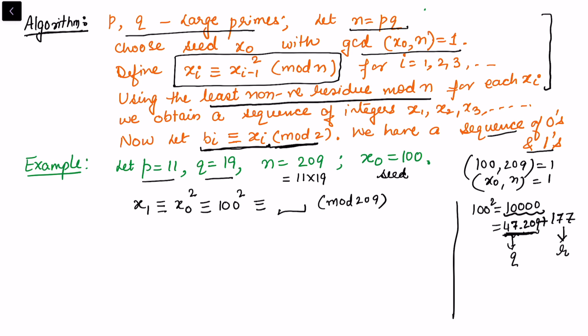remaining number is a multiple of 209, so we just have to keep the least non-negative residue. So here I will put 177. Now consider x1 as the next seed and we find x2, which is congruent to x1 square, and this is congruent to